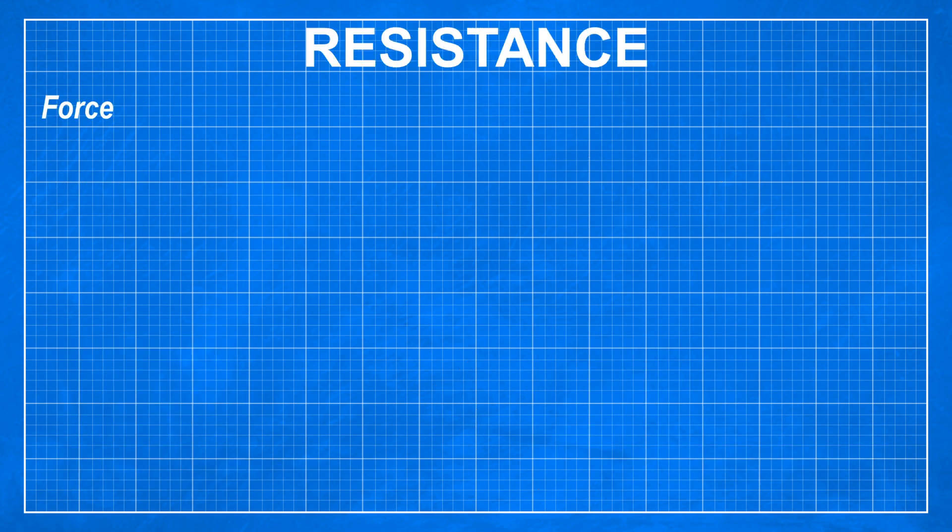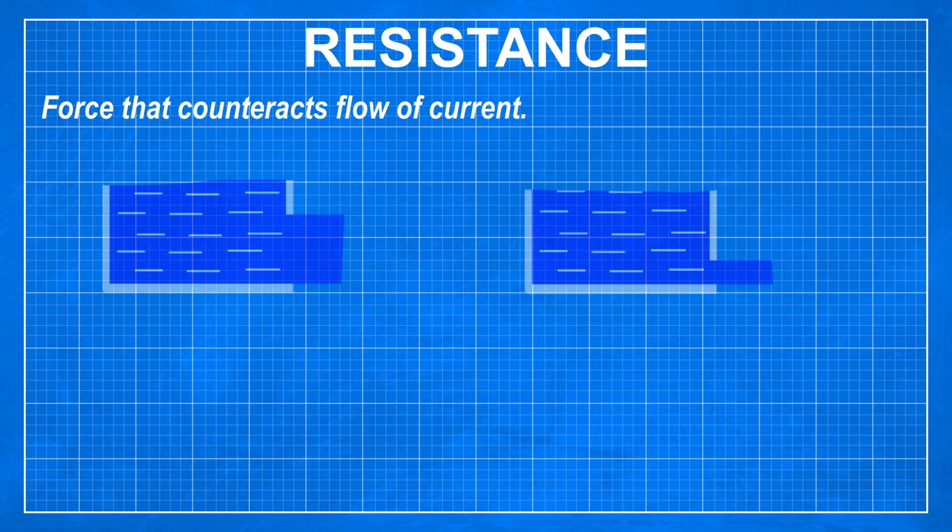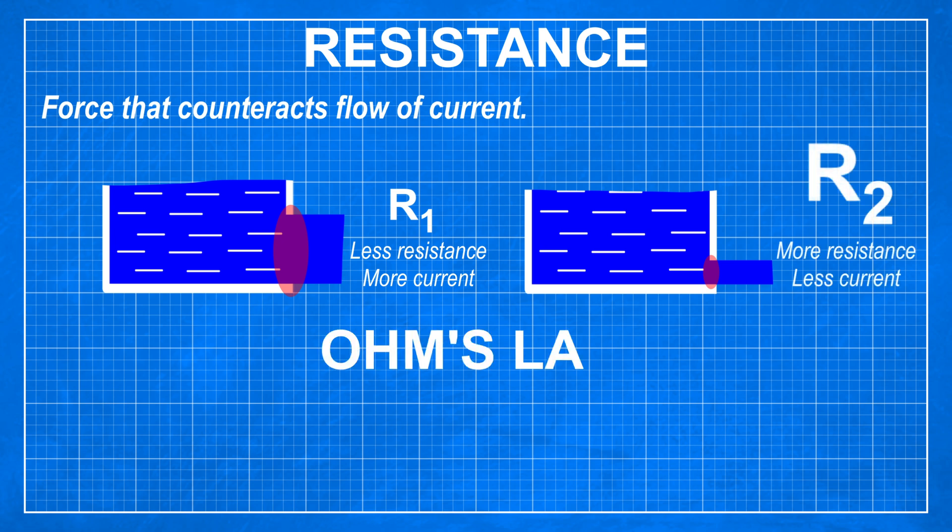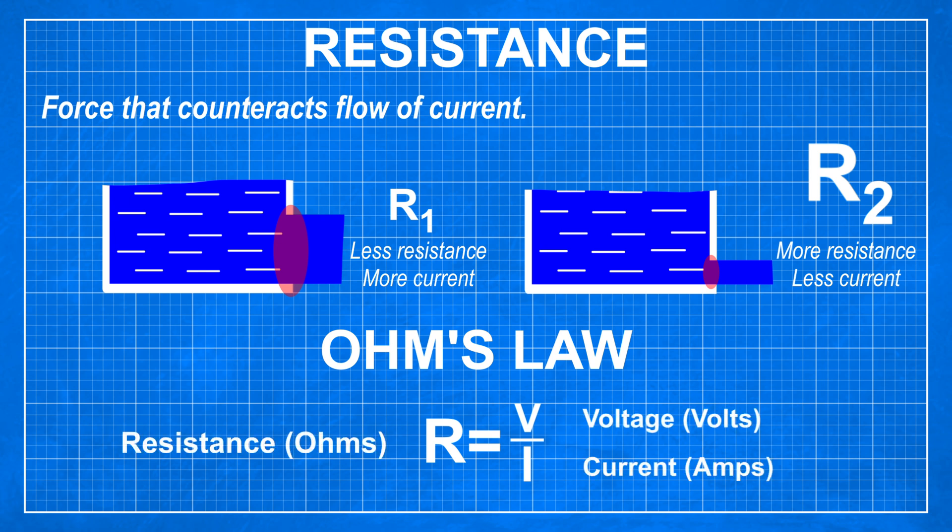Resistance can be summed up as a force that counteracts flow of a current. In water tank terms resistance is size of a hole at the bottom of tank. Bigger hole equals lower resistance so more current can flow out of a tank. The Ohm's law states that current through a conducting component is proportional to voltage at two points across this component. So resistance equals voltage divided by current.